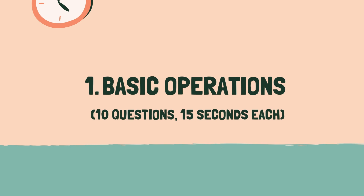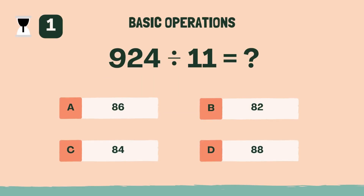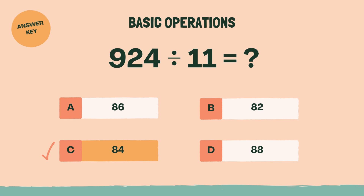Category 1: Basic Operations. 3, 2, 1, go. What is 924 divided by 11? The answer is C, 84.